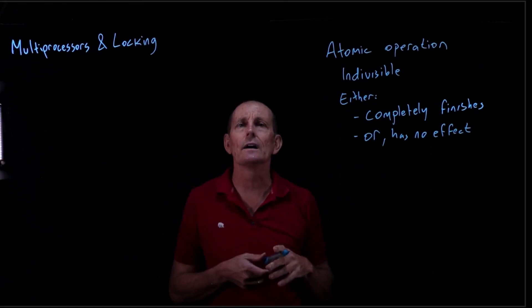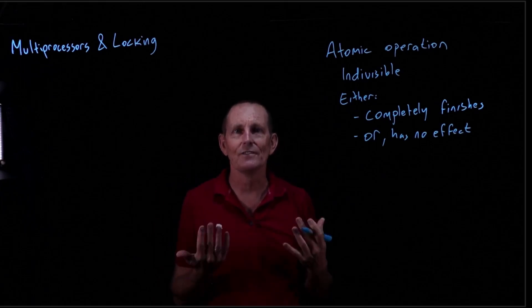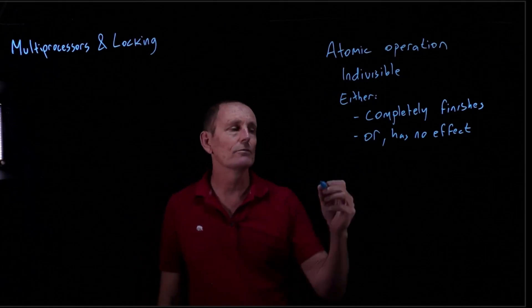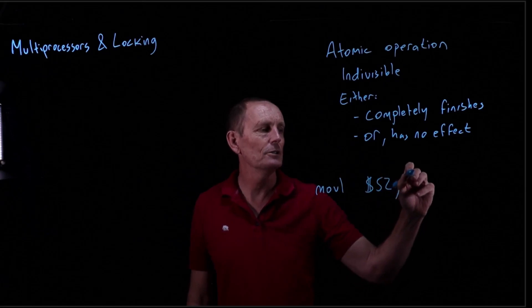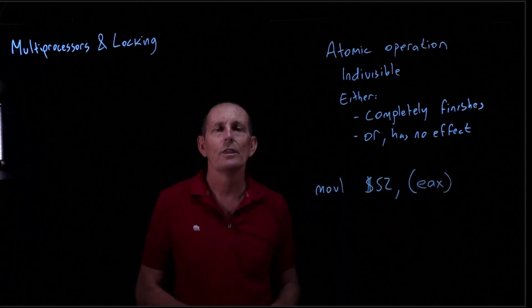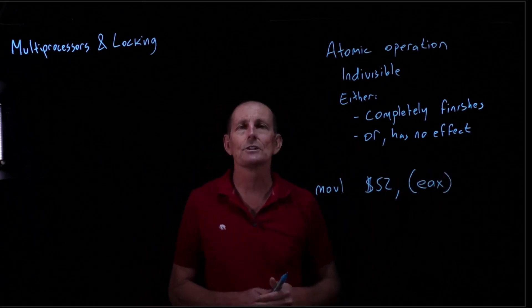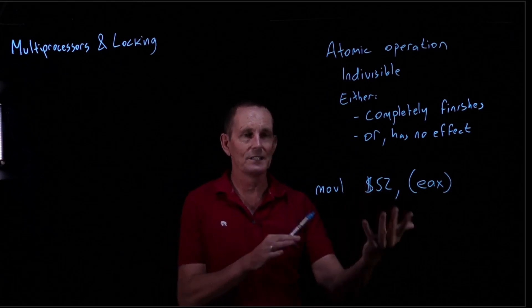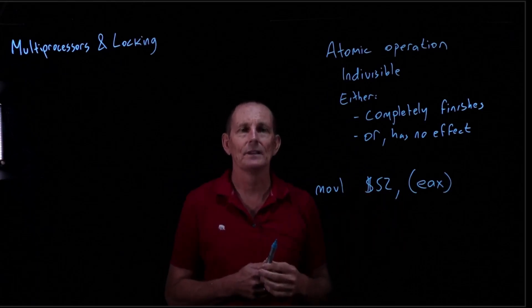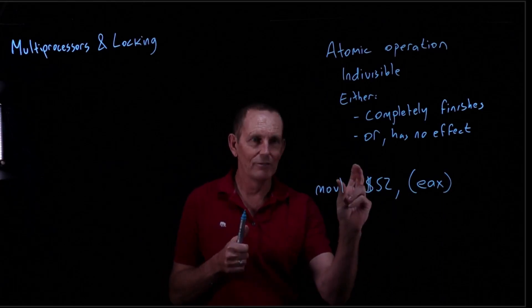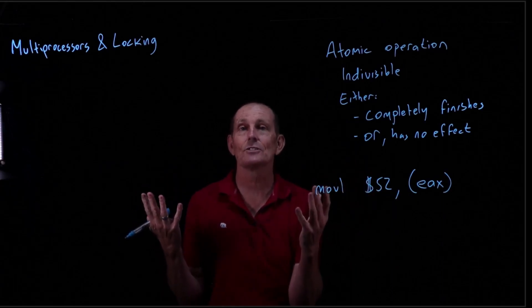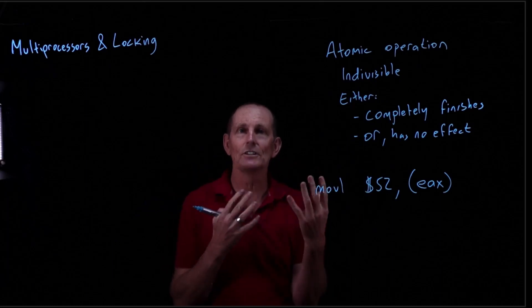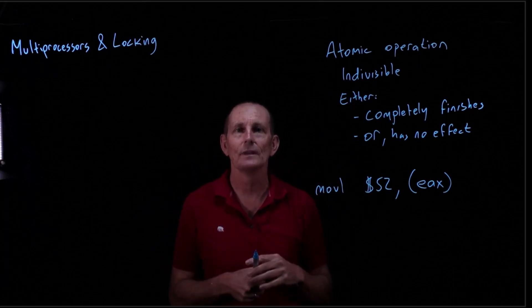We're limited in our atomic operations to loads and stores of single values. For example, if we move the value 52 into the memory referred to by the EAX register, that will either entirely happen or not happen. So it's not that part of the 32 bits is going to be written and can be seen from other processors. It is all 52 or none of the 52.